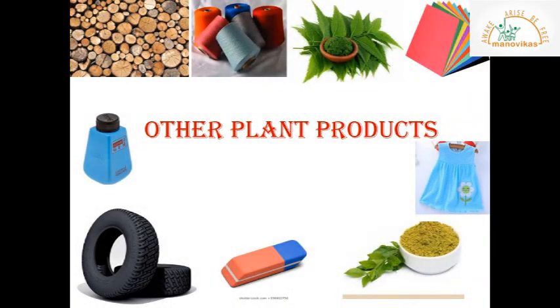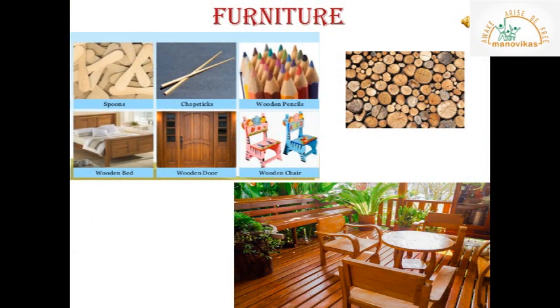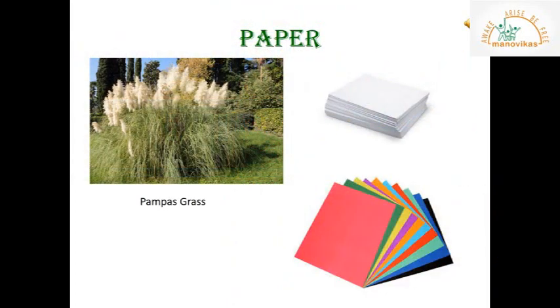Plants not only provide us with food but also various other things needed in our daily lives. Furniture: plants provide us wood which is used to make different kinds of furniture like beds, doors, tables, chairs, etc. Paper is also obtained from plants such as bamboo and the pampas grass.